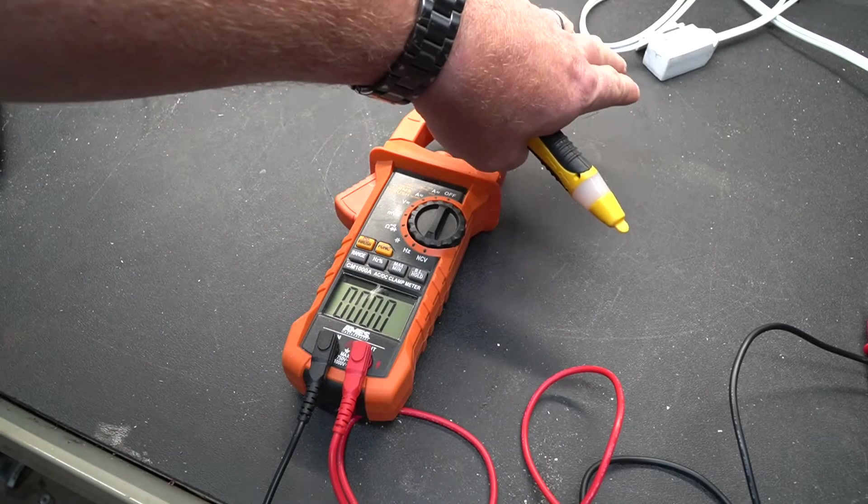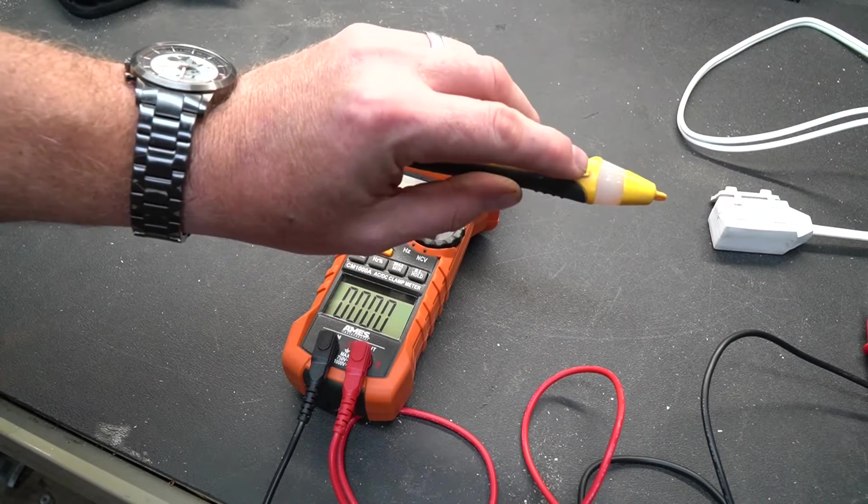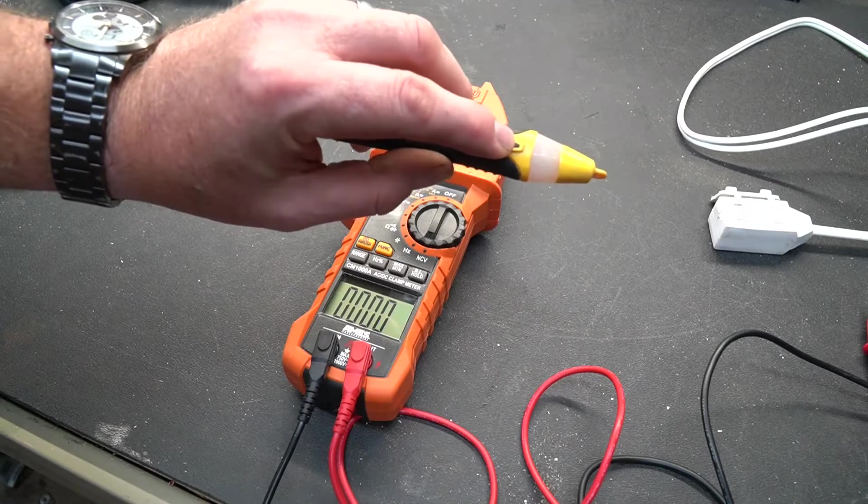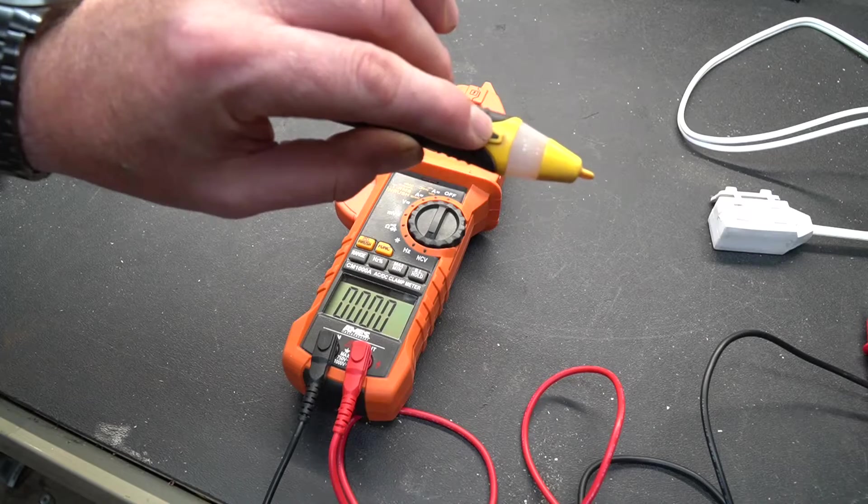I have an extension cord here on my workbench. The other end is plugged in. We will take this pin, get it close to the extension cord and you can see it's going to let us know that there is live power there. And it's singing and lighting up to let us know. As we pulled away it quiets down.